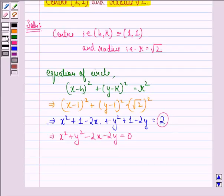So we say that our answer to this question is that equation of the circle with center (1,1) and radius root 2 is x² + y² - 2x - 2y = 0.